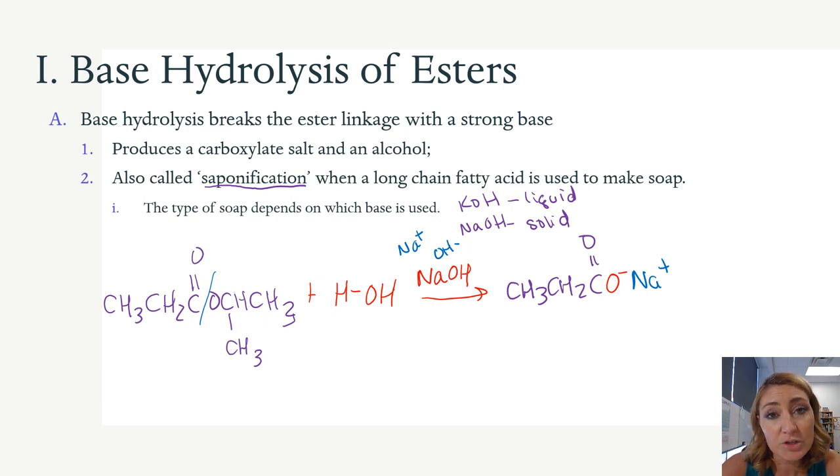But for now, this is what you would have to be able to reproduce on a quiz or a test, knowing that we're going to form a carboxylate salt. So that's the metal with the carboxylate anion. And we are also going to reform an alcohol.